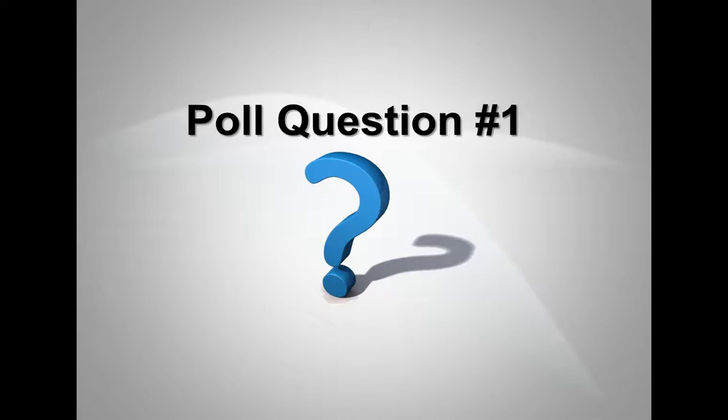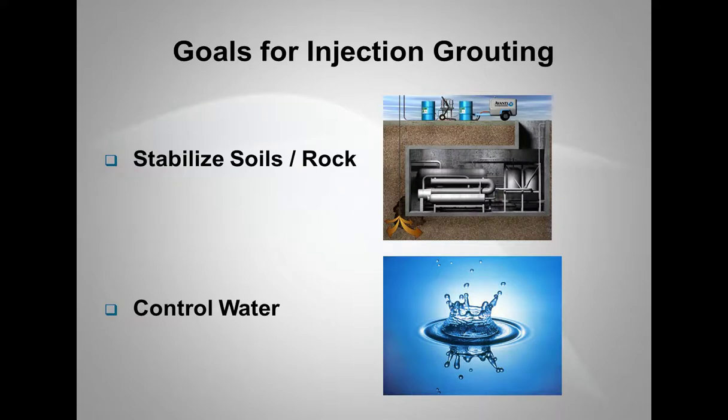All right, thank you Jim. I'll wait just for a few seconds for the results to come in from that survey. Looks like loss of ground stability is leading the pack here. We're split between ground stability now and tunnel flooding. It looks like loss of ground stability is the predominant response that we're getting at just over 50%.